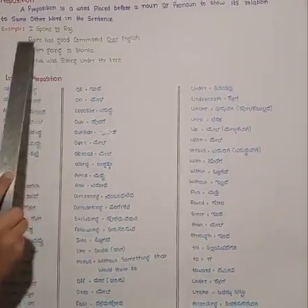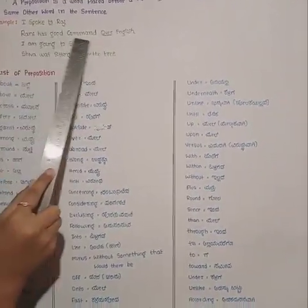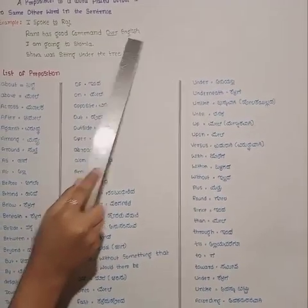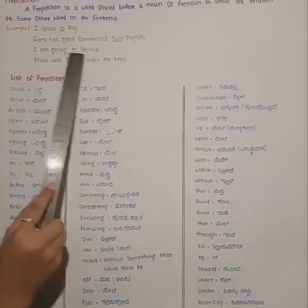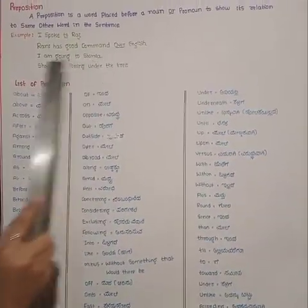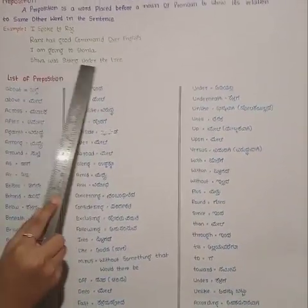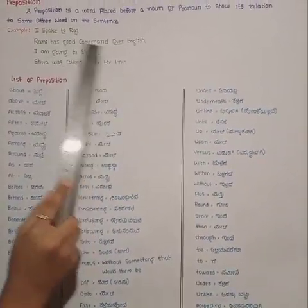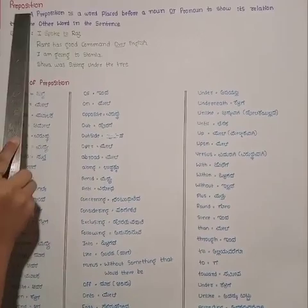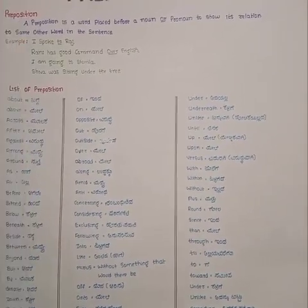Examples of preposition: I spoke to Raj. Rani has good command over English. I am going to Shimla. Shiva was sitting under the tree. These are examples of preposition.